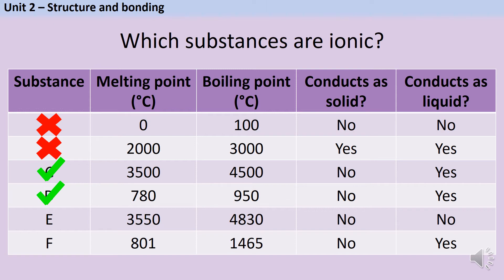Substance E has a very high melting point and boiling point, but it doesn't conduct even when it's been melted. This is probably diamond, and it's definitely not an ionic substance. Finally, substance F has a nice high melting point and boiling point, it doesn't conduct as a solid, and it does as a liquid. So we have a third ionic compound in our table.